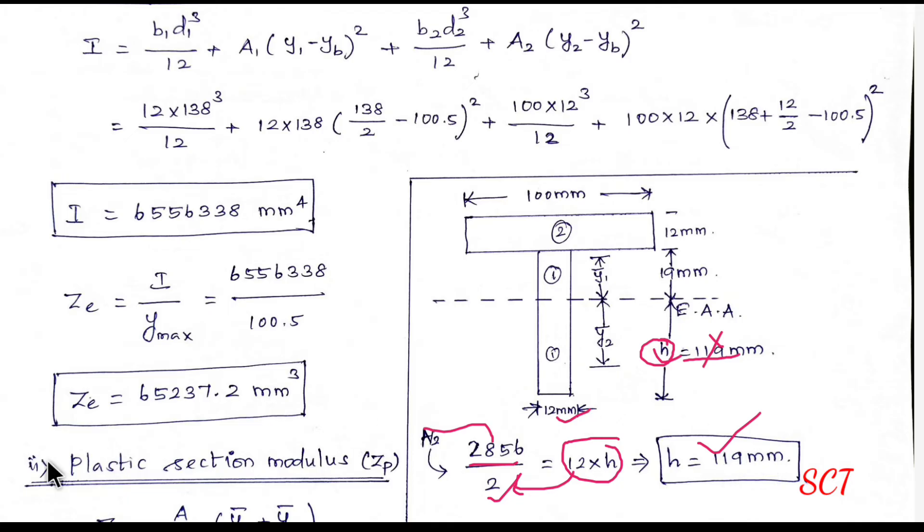h is equal to 119 mm. So with 138 minus 119 the height is 19 mm and width is 12 mm.